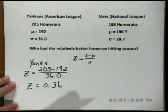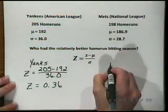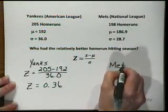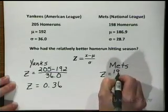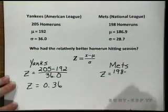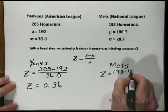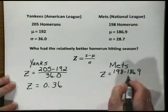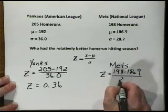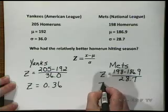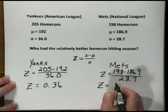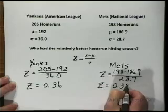Now, let's do the same thing for the Mets, converting that score to a Z-score. For the Mets, we're going to use their home run value of 198. We're going to subtract the mean of 186.9 and divide by the standard deviation of 28.7. This gives us a Z-score of 0.39.